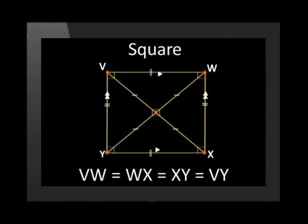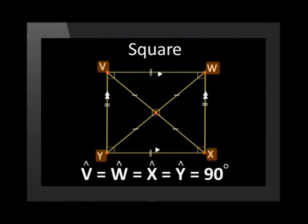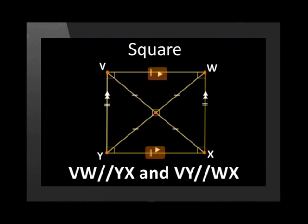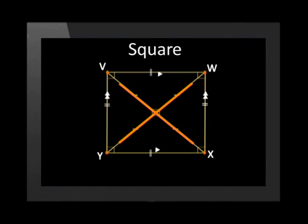The most well-known quadrilateral must be the square. The properties of a square are that all four sides are equal in length and all angles are equal to 90 degrees. The opposite sides of a square are parallel. The diagonals bisect each other at 90 degrees and are equal in length. The diagonals also bisect the corner angles.